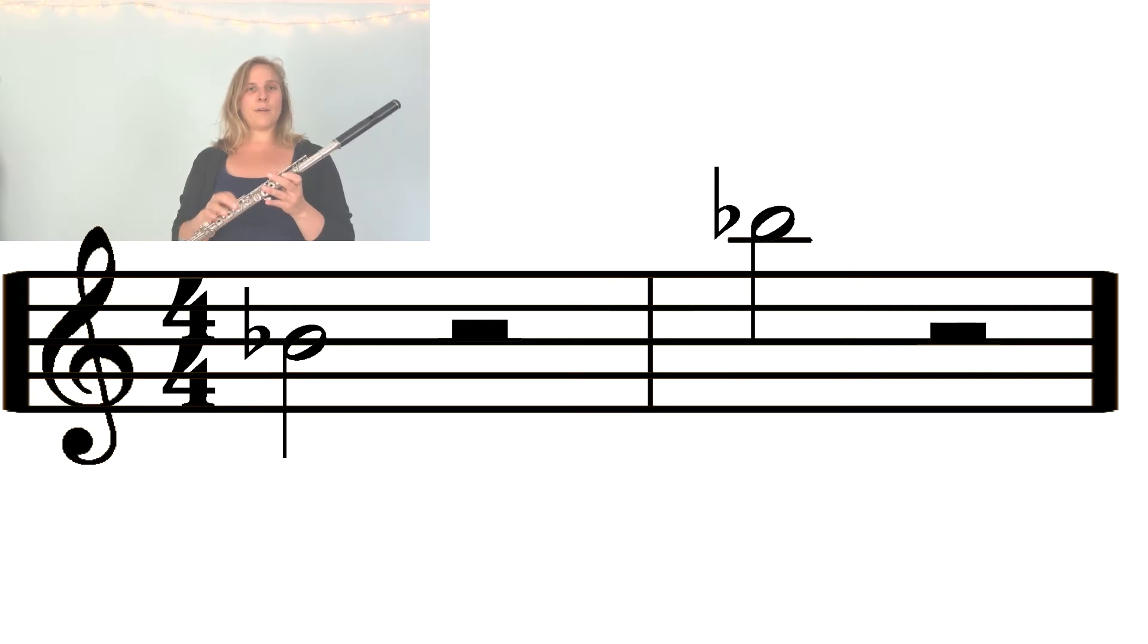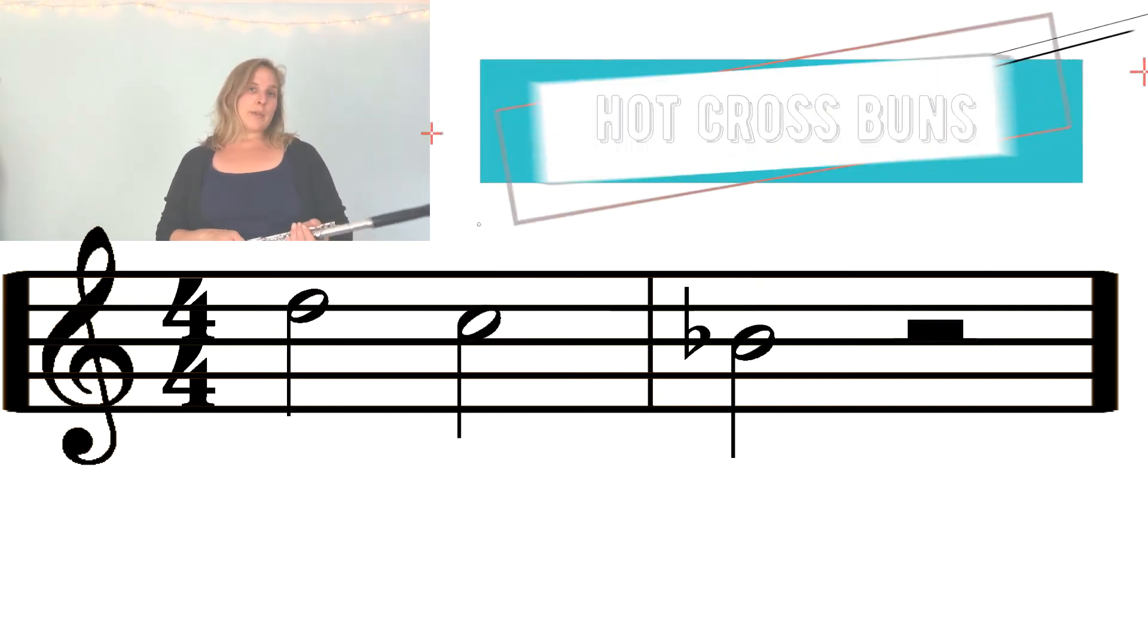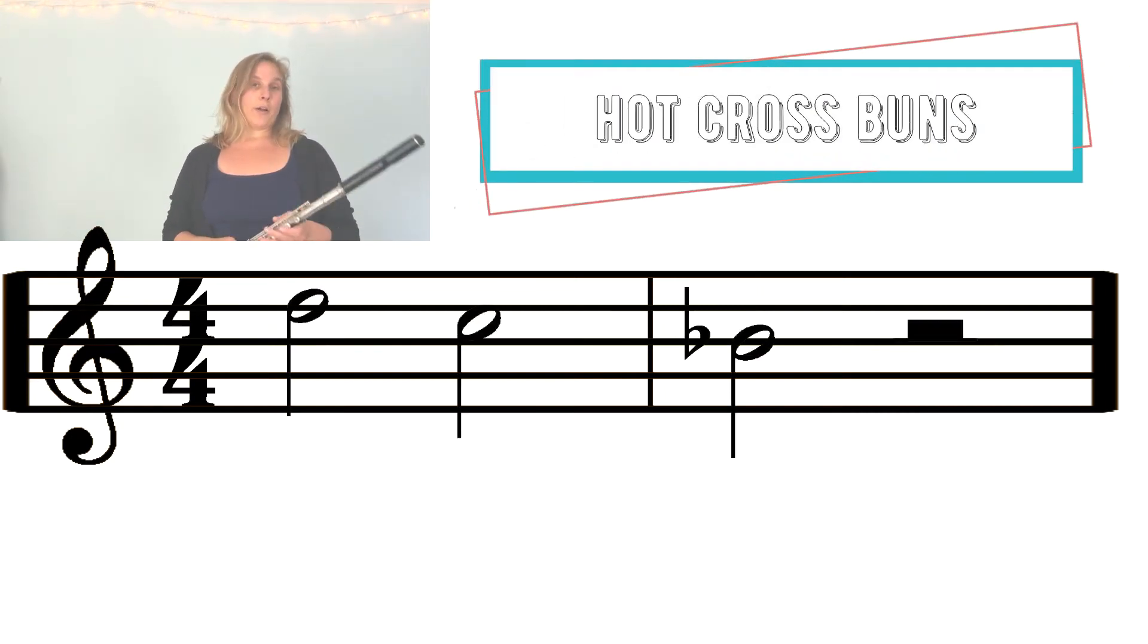So the B flat in the staff, of course, is the lower one. And a higher B flat would be higher on the music staff. We're going to now repeat that stepping action of hot cross buns for the next measure. D, C, and B flat.